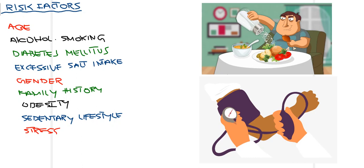Excessive salt intake leads to increased water retention by the kidneys, raising blood volume and increasing chances of hypertension. Gender and family history are also important — if a patient has a family history of hypertension, they are more likely to develop it. Obesity, sedentary lifestyle, high carbohydrate and salt intake all contribute. Lastly, unmanaged stress raises hormones such as epinephrine and cortisol, increasing blood pressure.